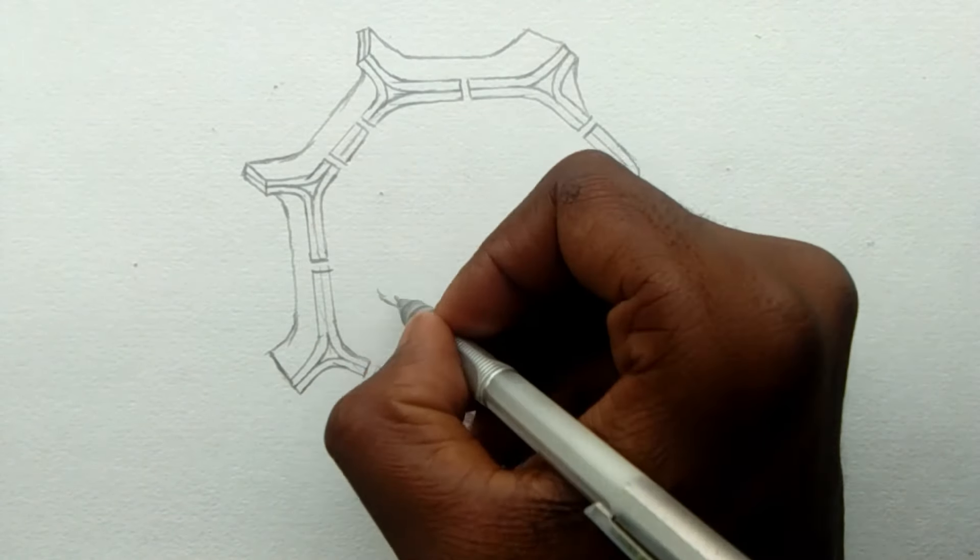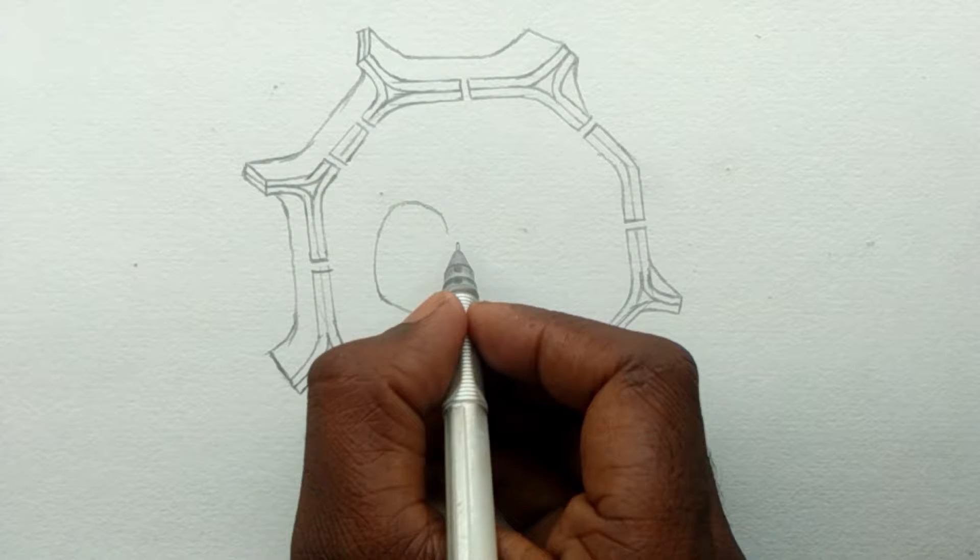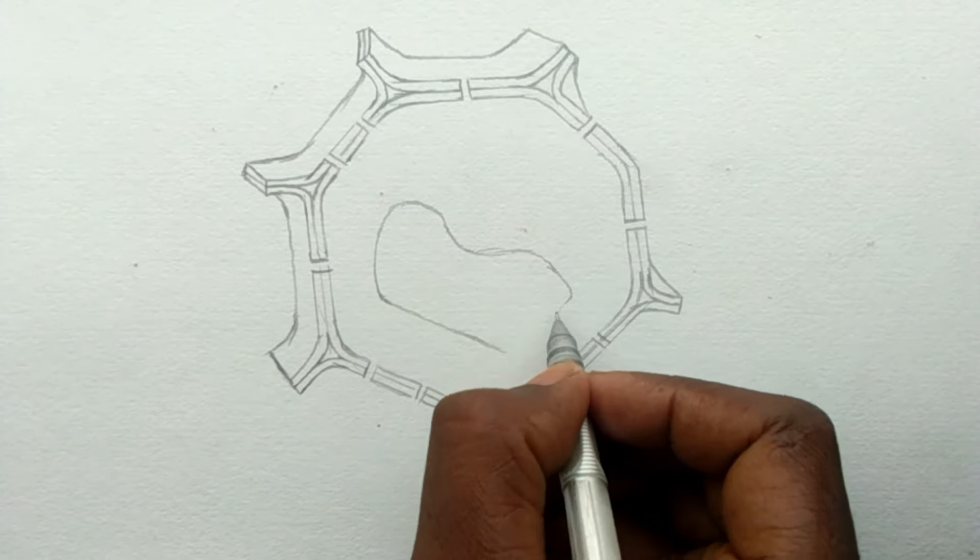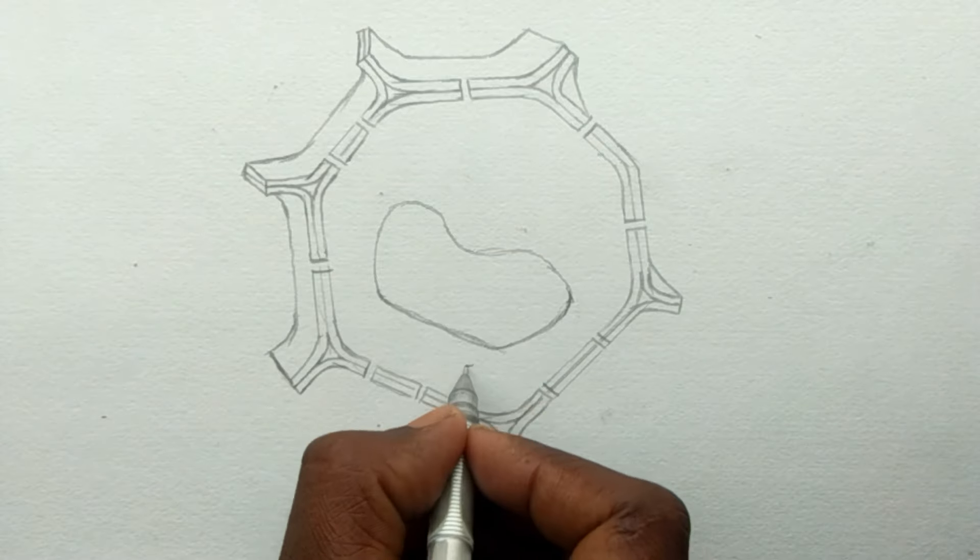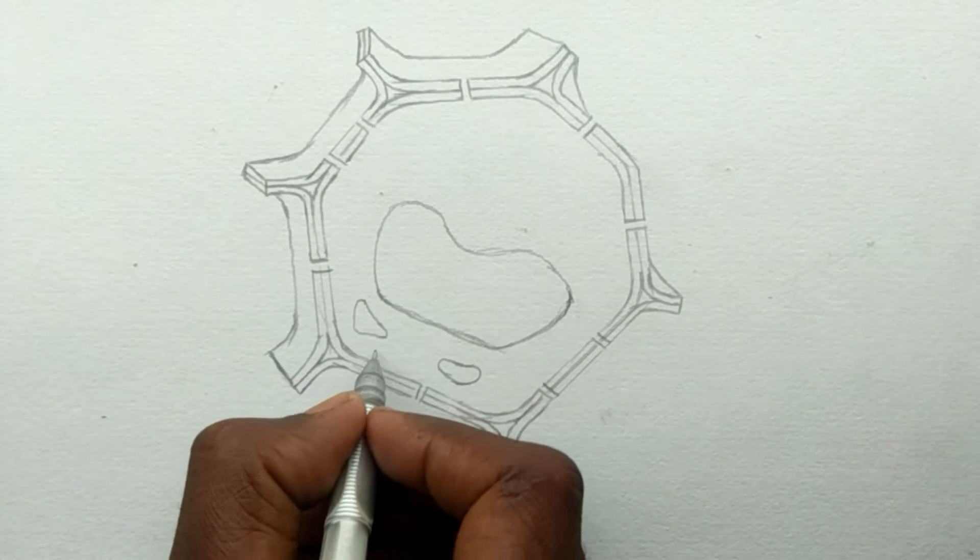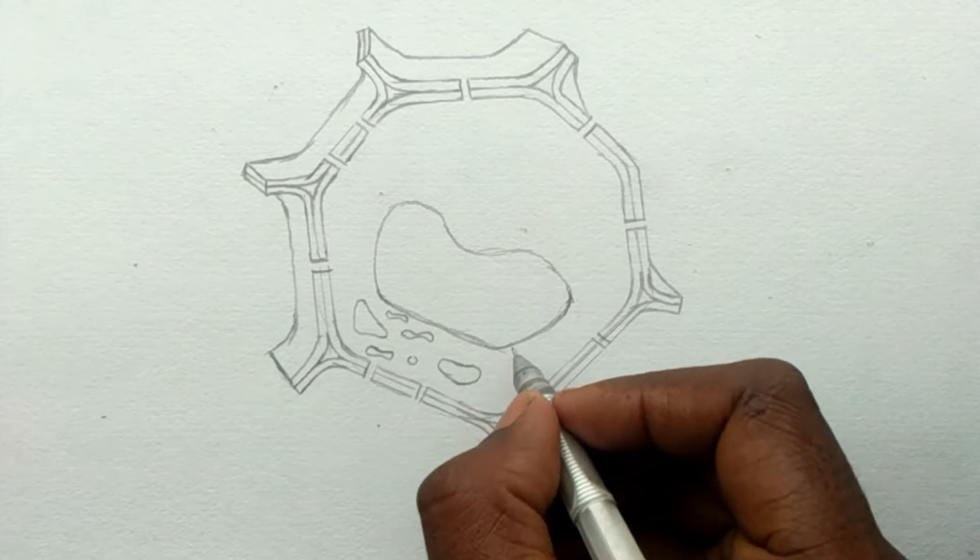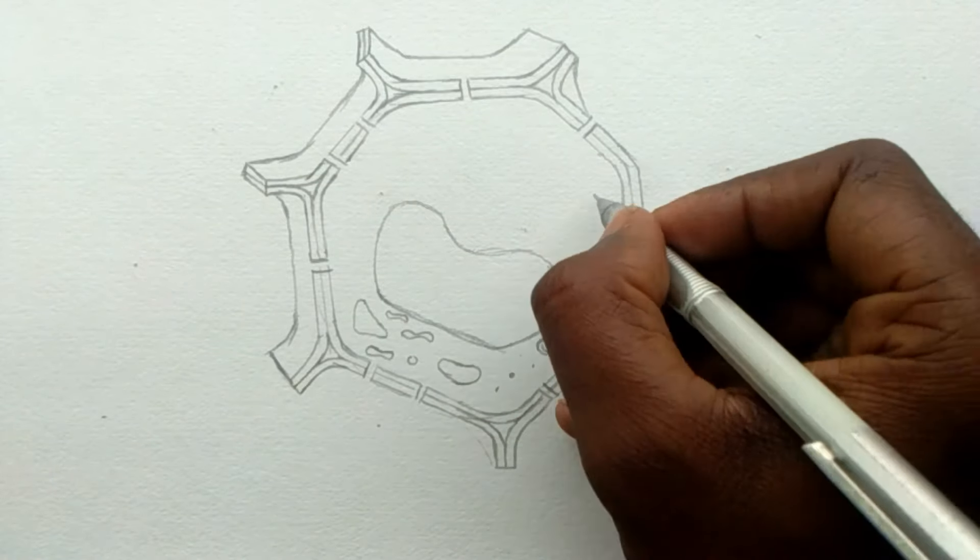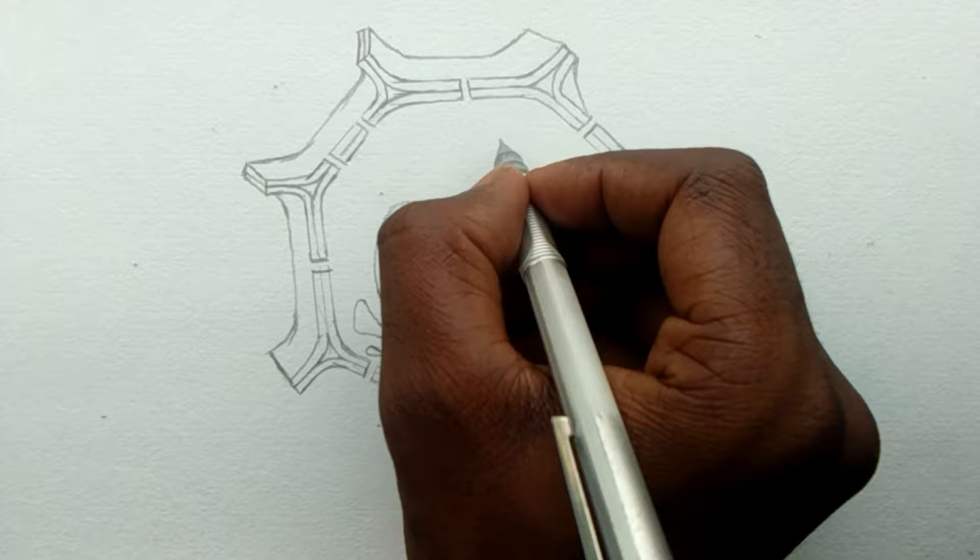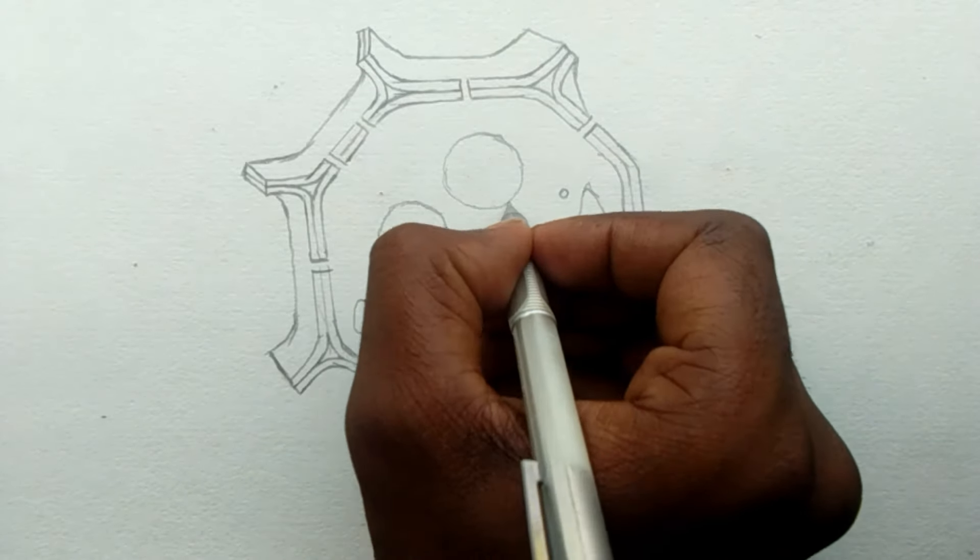Now as our outer diagram is ready, we will draw the internal parts. These are the most important parts of any bio diagram and you should watch and observe them carefully so you could draw them properly in your examination and get full marks.